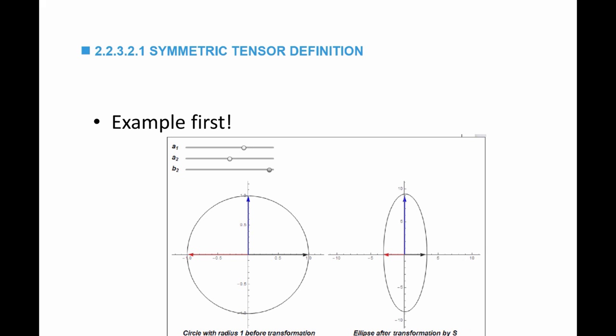Here is another example. Playing around with the components of S, you can see there are two main directions. The vertical direction has a length of 1 and it was stretched to almost 10, and the second direction has a horizontal length of 1 and it was stretched but only to a length of around 3.